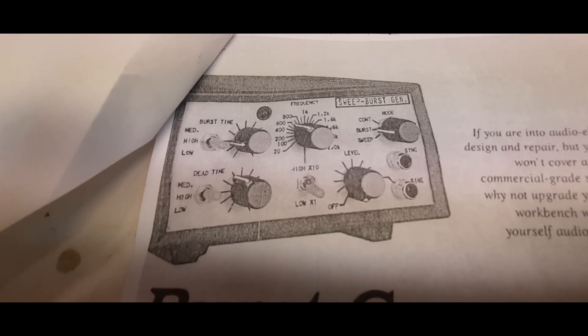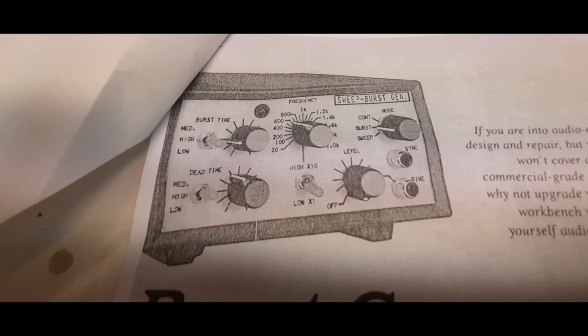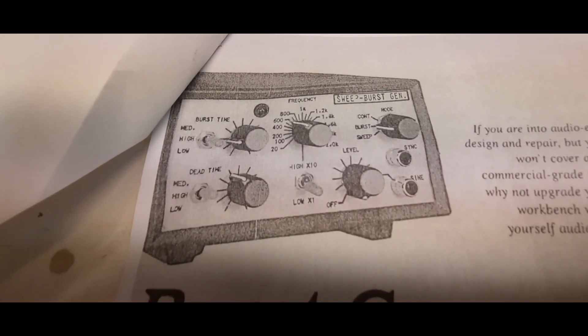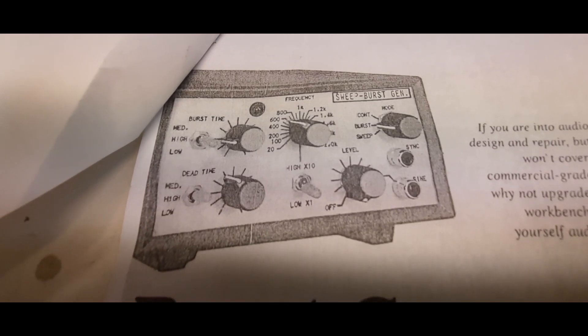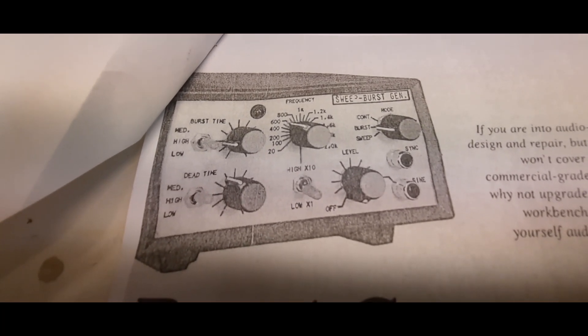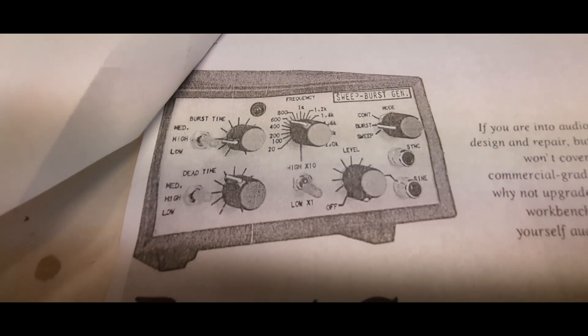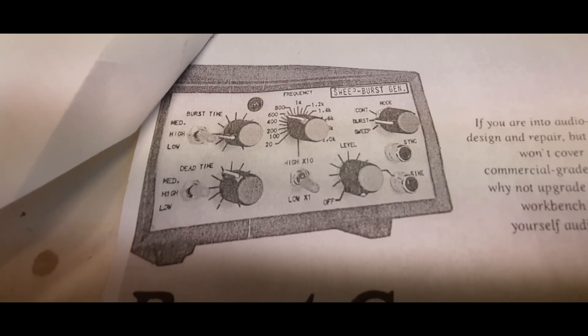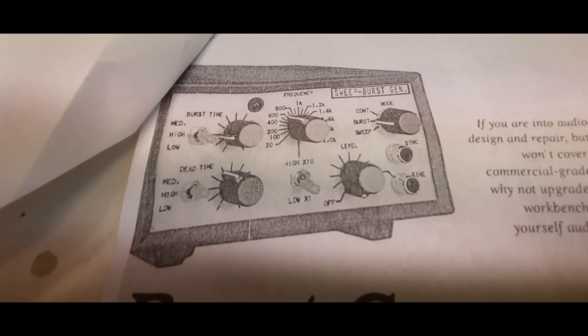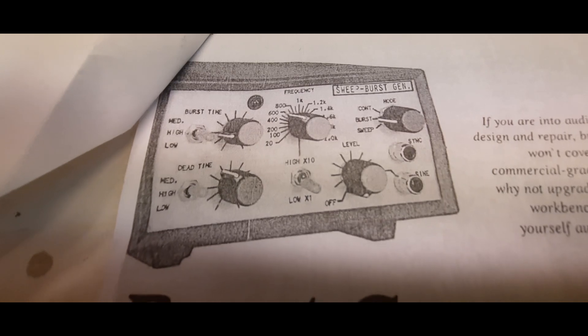The burst sweep generator is a really good tool to have on your bench. You can have a continuous sine wave from 20 Hz to 2 kilohertz, and you can actually go from 2 kilohertz up to 20 kilohertz. You can also have a burst signal output controlled by that sync input RCA connector there.